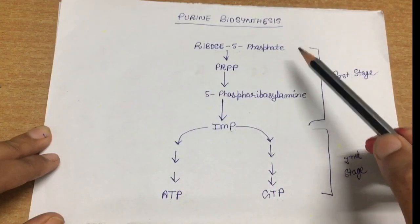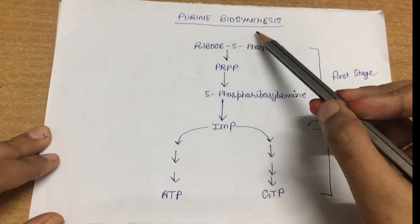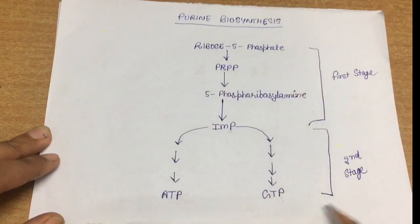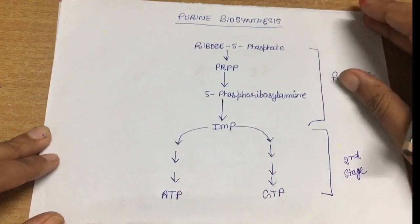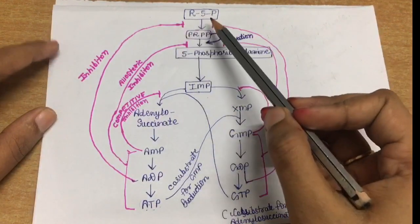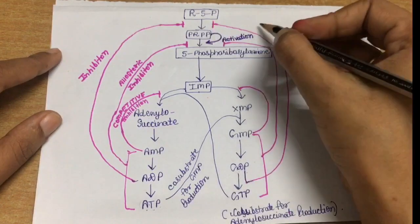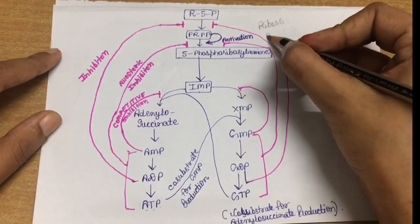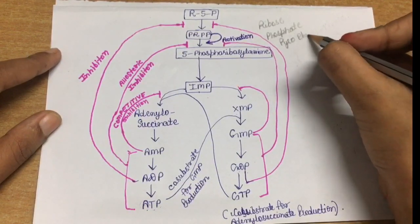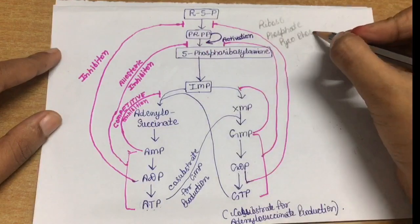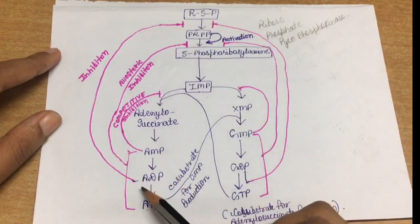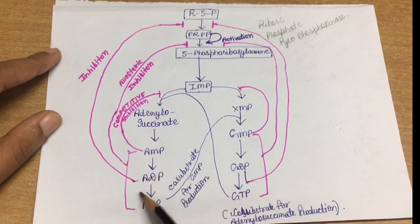This de novo biosynthesis process occurs in the liver. If purine biosynthesis takes place in RBCs or WBCs, it will occur by a salvage pathway. In the de novo pathway occurring in the liver, ribose-5-phosphate gets converted into PRPP with the help of the enzyme ribose phosphate pyrophosphokinase — the enzyme converting ribose-5-phosphate into PRPP. This enzyme is inhibited by the presence of ADP and GTP when they are present in very high concentration.